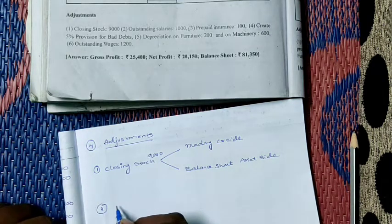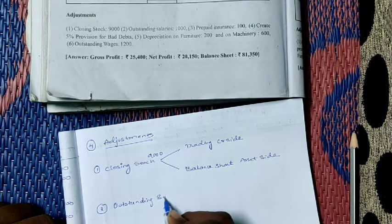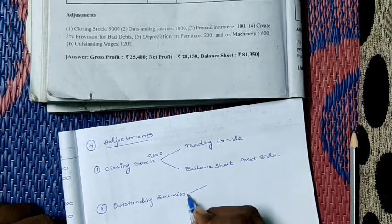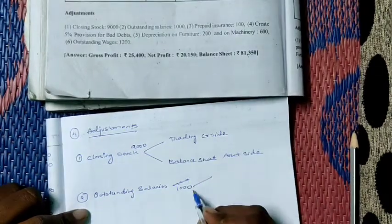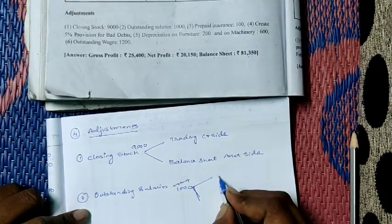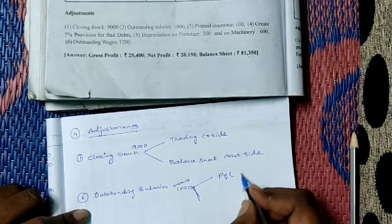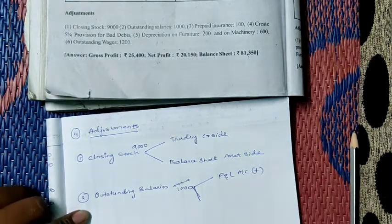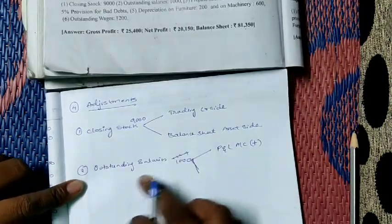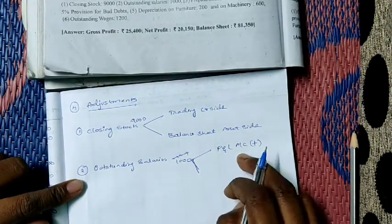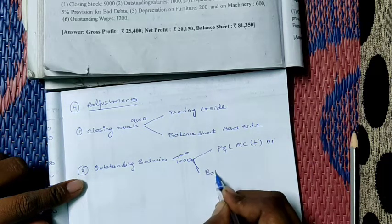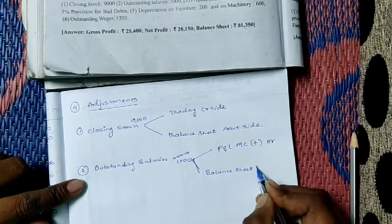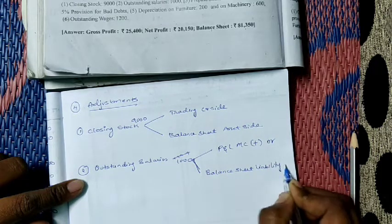Second adjustment: outstanding salaries. Outstanding salaries is 1,000. This 1,000 will appear twice — you have to add it to the salaries in P&L account, debit side. Next time it will appear in balance sheet, liability side.